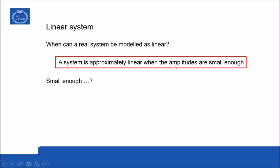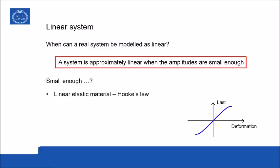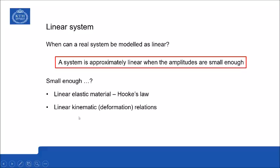And as I say here, that can be done when the oscillation amplitudes are small enough. And what does this small enough mean? Well, first of all, the amplitudes must be so small that the material properties can be described with Hooke's law. There should be linear elastic, so no plastic deformation is allowed. Secondly, the kinematic relations must be linear.